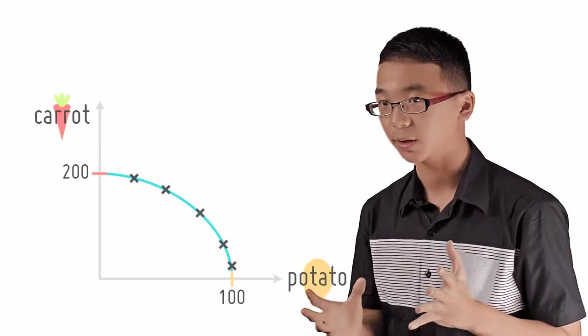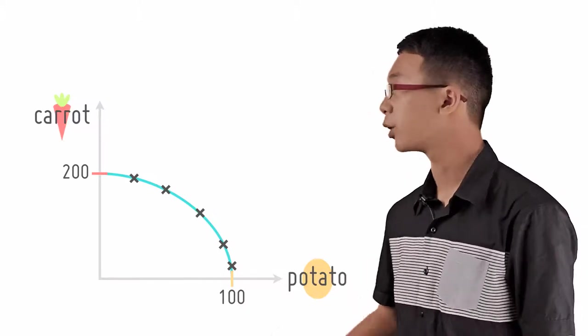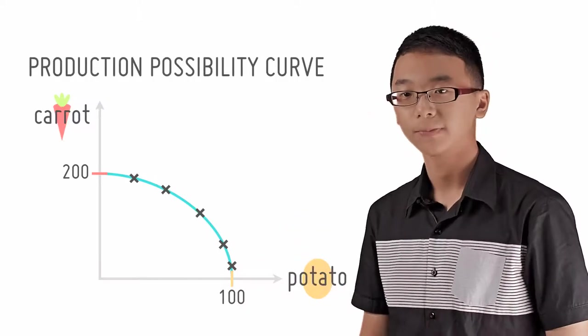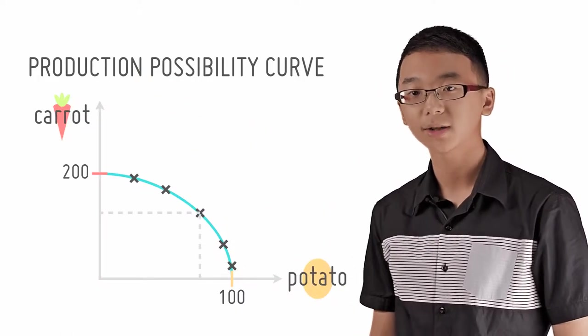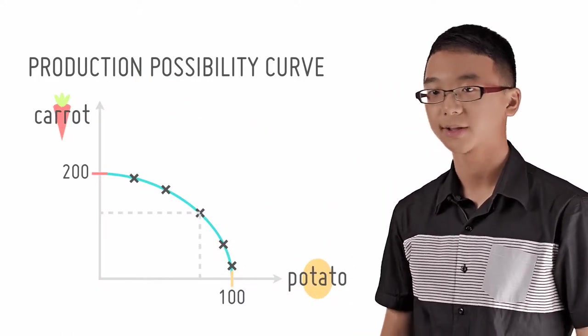There is a special name for this graph, and it is called a production possibility curve. It shows the possible combinations of the two goods that can be produced simultaneously at a point in time, Ceteris Paribus.